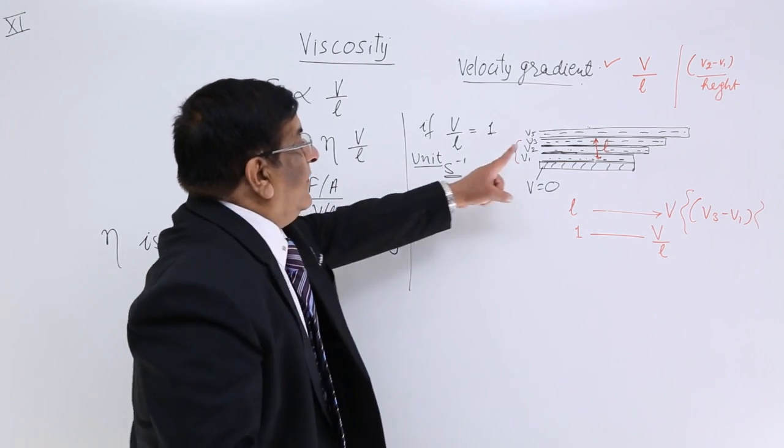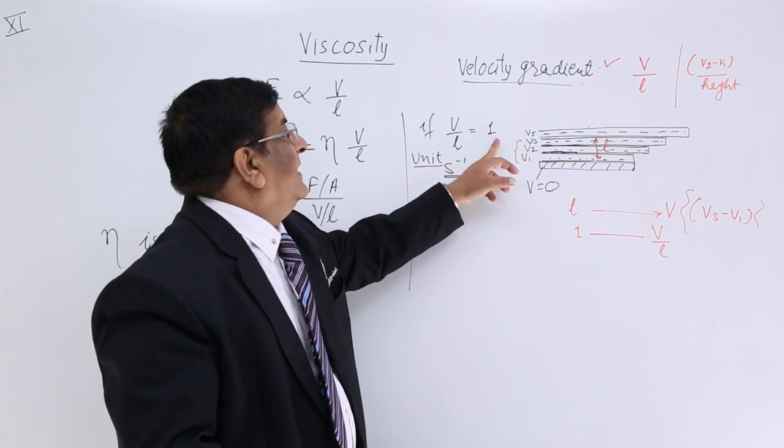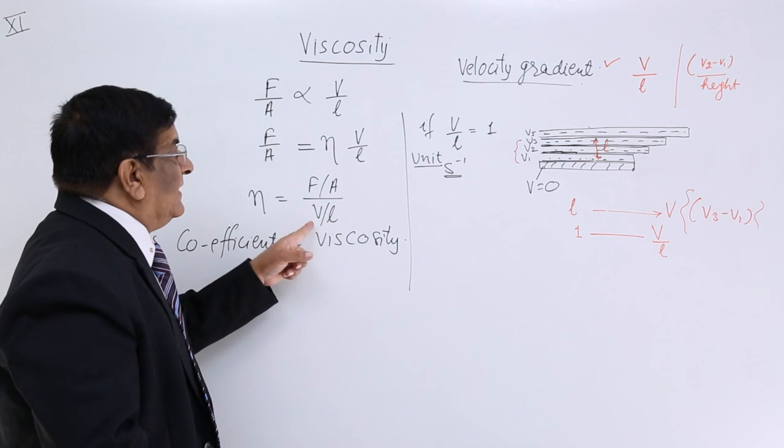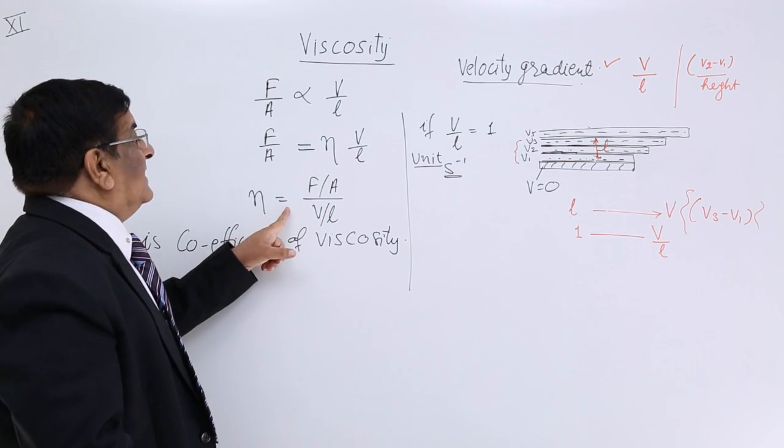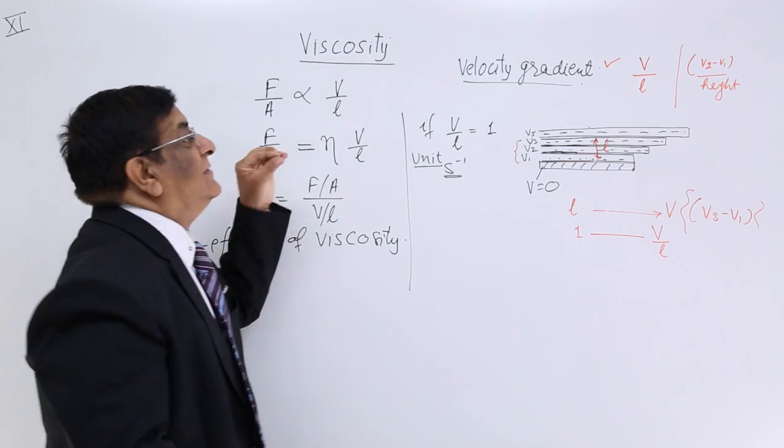Now, if there is a liquid which is flowing with a velocity gradient of 1, we can put 1 here. Then what is eta equal to? F upon A, that is pressure.